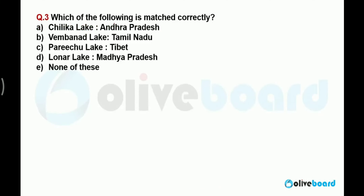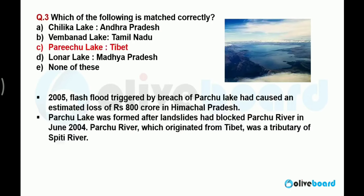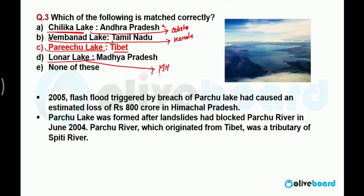Next question: which of the following is matched correctly? The correct answer is Parichu Lake, which is situated in Tibet. Chilka is not correctly matched here because Chilka is situated in Odisha, not Andhra Pradesh. Vembanad Lake is situated in Kerala, not Tamil Nadu. Lonar Lake is situated in Maharashtra, not Madhya Pradesh. So Parichu Lake situated in Tibet is the correctly matched answer.